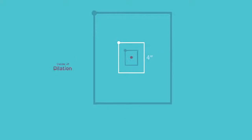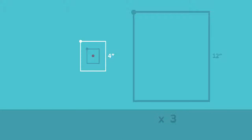Dilation is where a two-dimensional shape grows or shrinks proportionally from a point called the center of dilation. Here we tripled the original rectangle, and here we divided it in half.